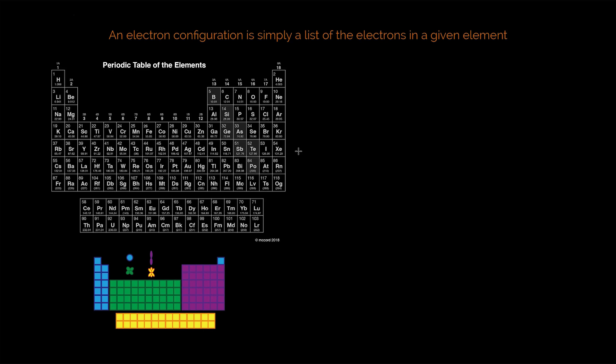When we write the electron configuration for an element, we are simply listing all of its electrons according to their quantum numbers for energy and shape. In order to do this, I added a supplemental periodic table here that arranges the periodic table according to its blocks, where you can see the different shapes of electron orbitals.